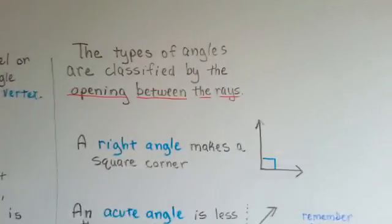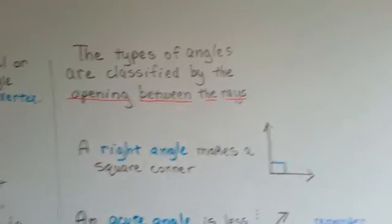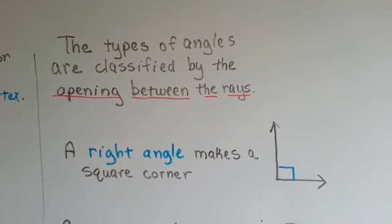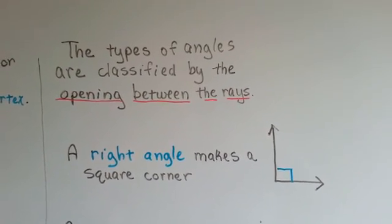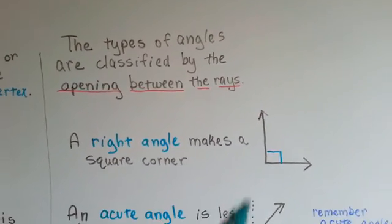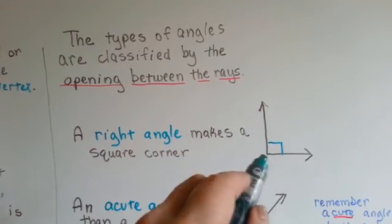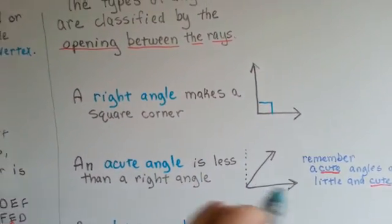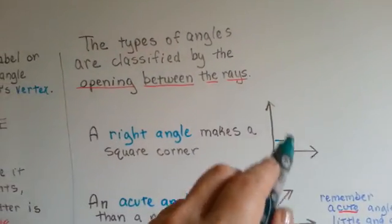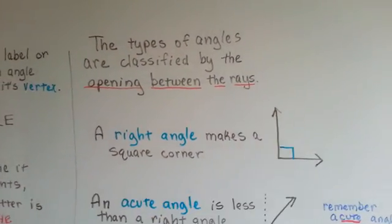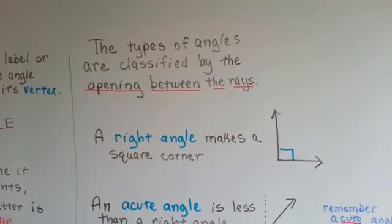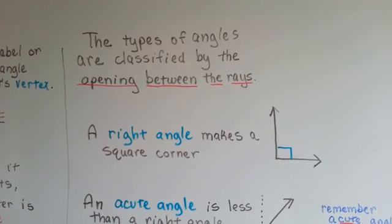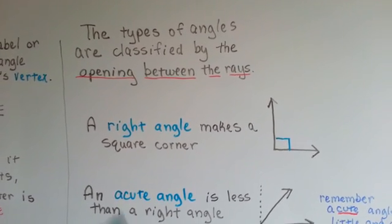The types of angles are classified by the opening between the rays — that's a ray and that's a ray. So whatever the opening is between the rays, that's how you classify the angle. That's how it's named.